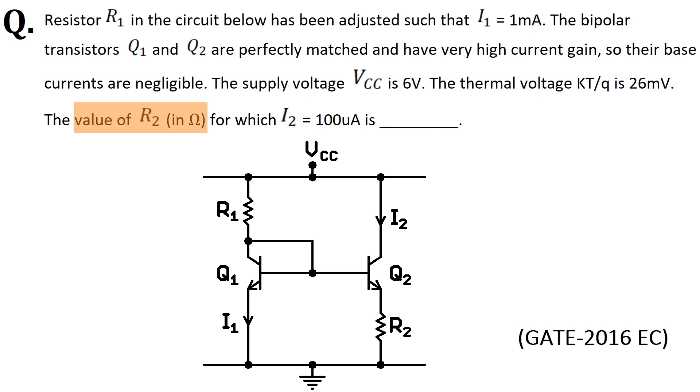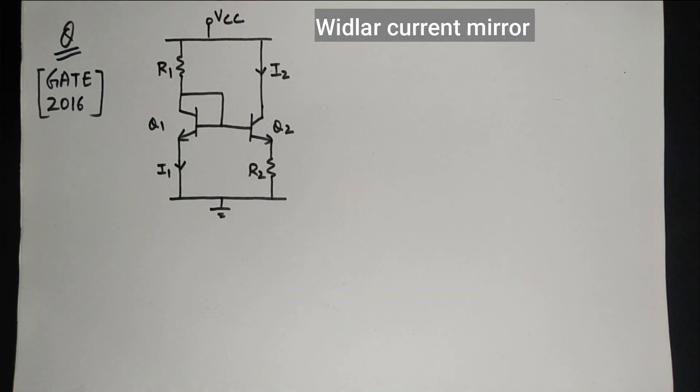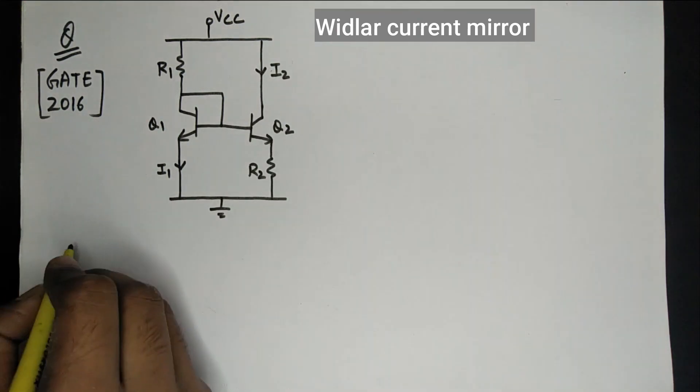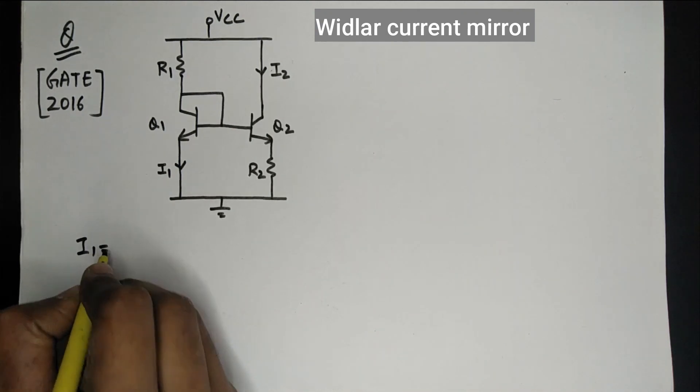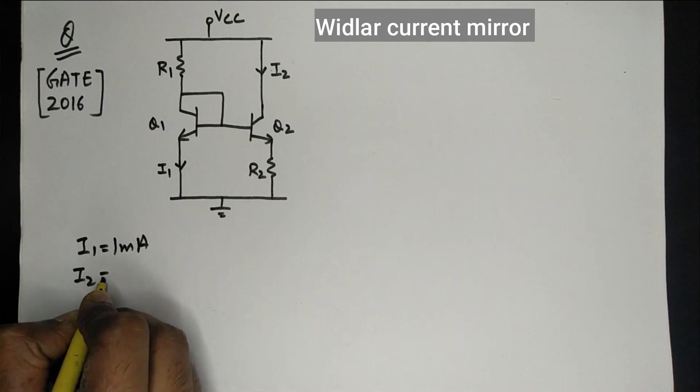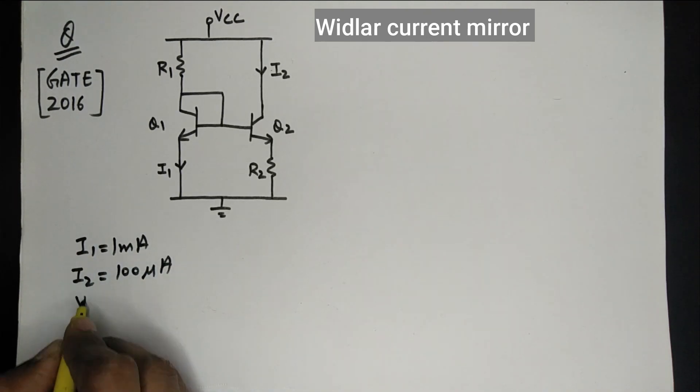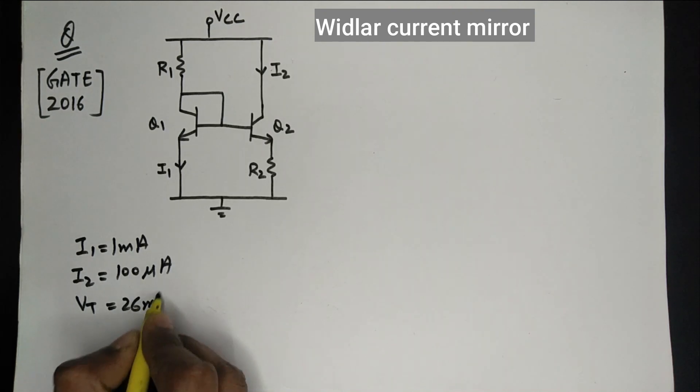And we have to find the value of R2. Now let's solve this question. Let's write down the values we have and then we will find the value of R2. In this question, the value of I1 is given as 1 milliamp and value of I2 is given as 100 microamps. The thermal voltage equals 26 millivolts.